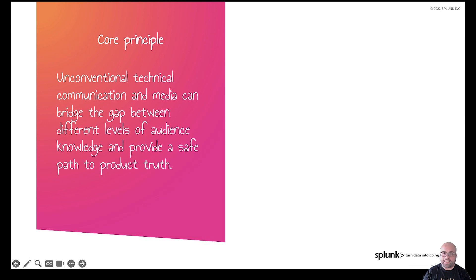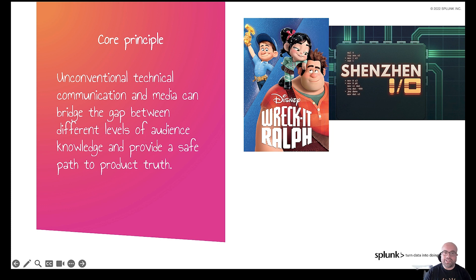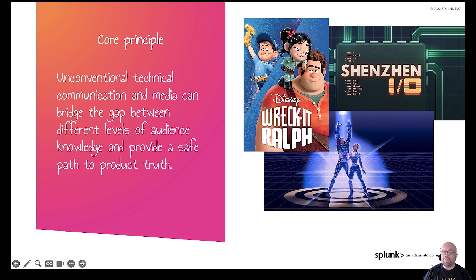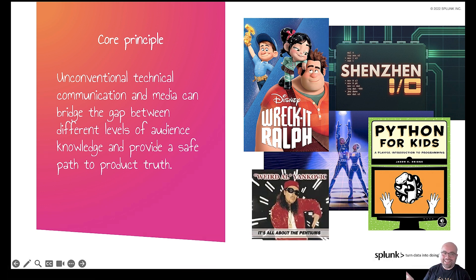Storytelling can be a shortcut to get to product truth, but what is the core principle guiding that? Here it is: unconventional technical communication and media can bridge the gap between different levels of audience knowledge and provide a safe path to product truth. To make it less dry, here are some examples. We have Wreck-It Ralph explaining video games. Shenzhen IO is a fantastic indie video game that does a terrific job of explaining how CPUs work in circuits. We have Tron, the famous movie from 1982, representing what's inside computers in a poetic way. Python for Kids — popular computer science for a different audience. There are even songs like 'It's All About the Pentiums' by Weird Al Yankovic. Classic.